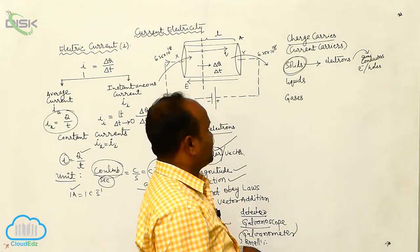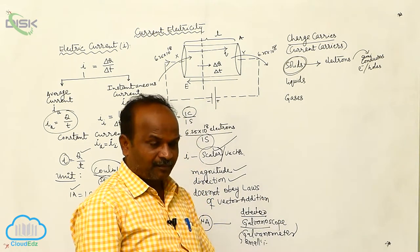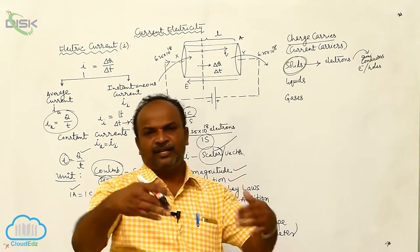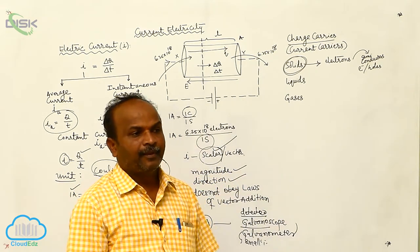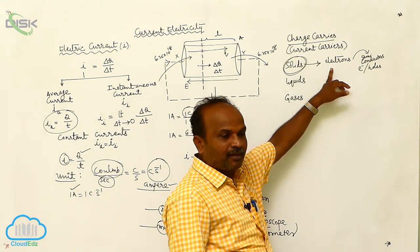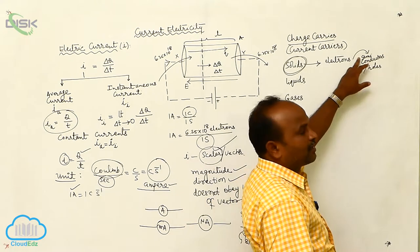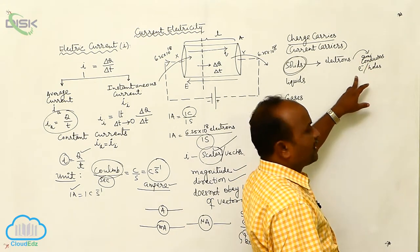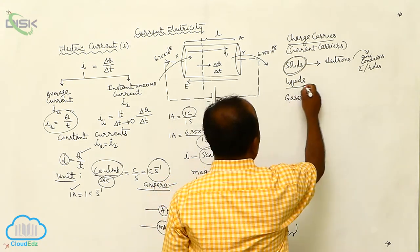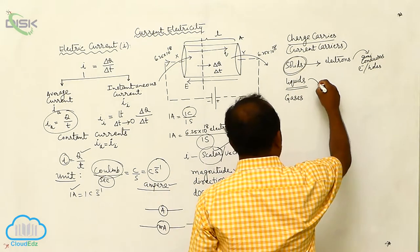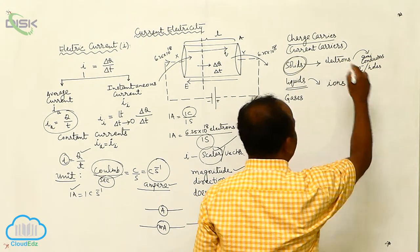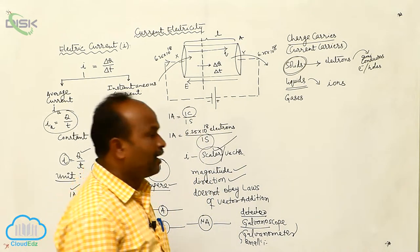In solids, there are conductors, semiconductors, and insulators. In insulators there is no current. In conductors, the current is due to free electrons. In semiconductors, the current is due to electrons as well as holes. In liquids, the current is due to the ions.